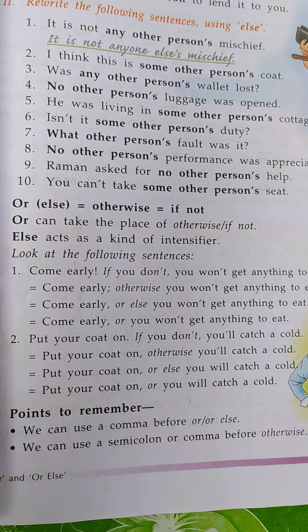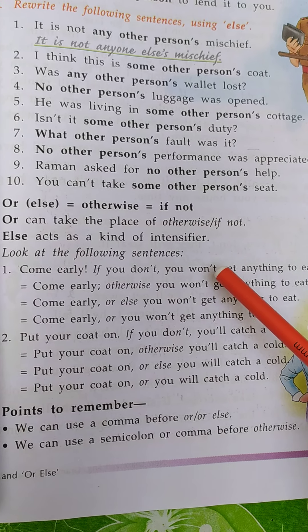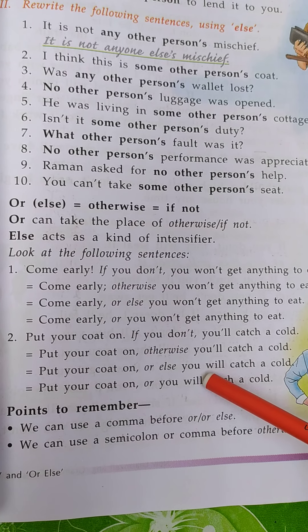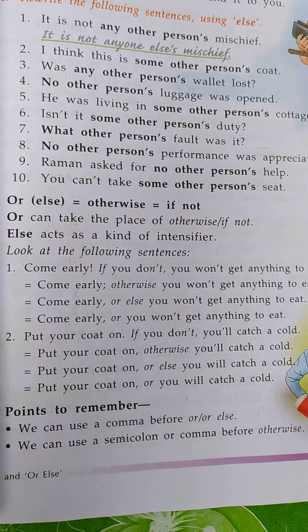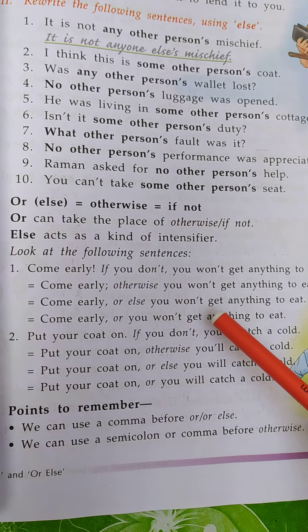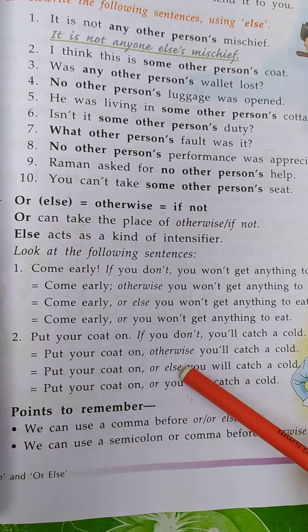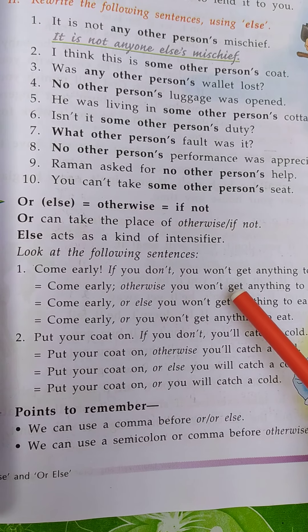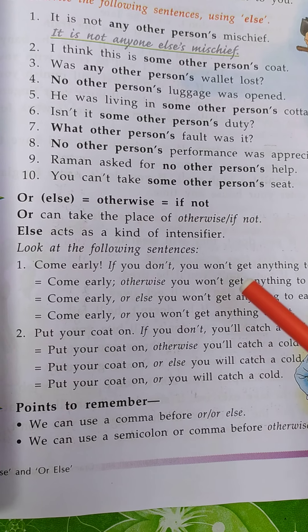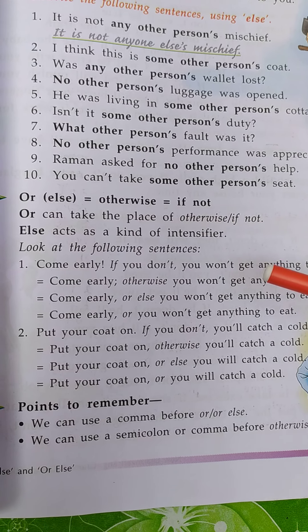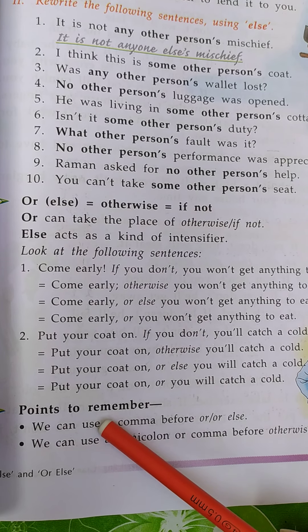So students, in these two sentences we have studied how and in which place we can use 'or else.' इन दोनों examples में हम देखे हैं कि हम 'or else' को कौन सी place में यूज कर सकते हैं। You have to study these two examples properly with the rule — the or else rule.